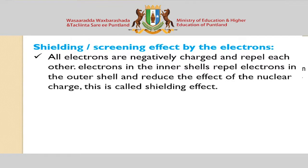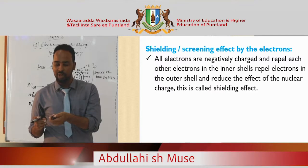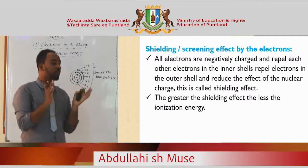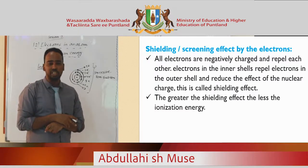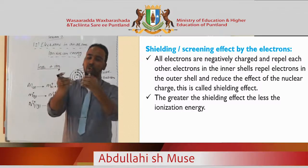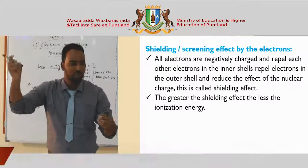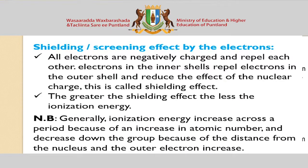The inner electrons in inner shells shield the outer shell electrons from the full nuclear charge. The greater the shielding effect, the less the ionization energy. In conclusion: ionization energy generally increases across a period because nuclear charge increases, and ionization energy decreases down a group because atomic radius and shielding both increase.